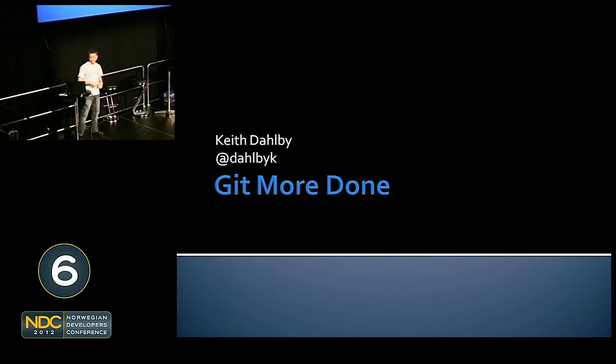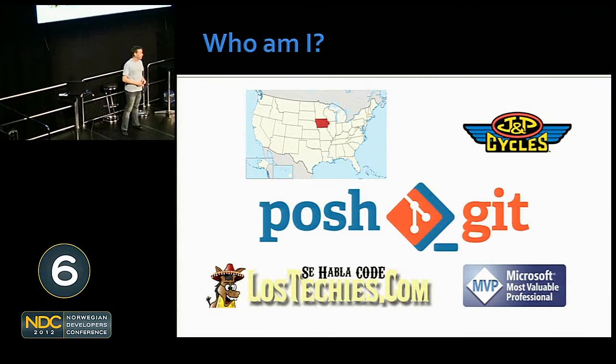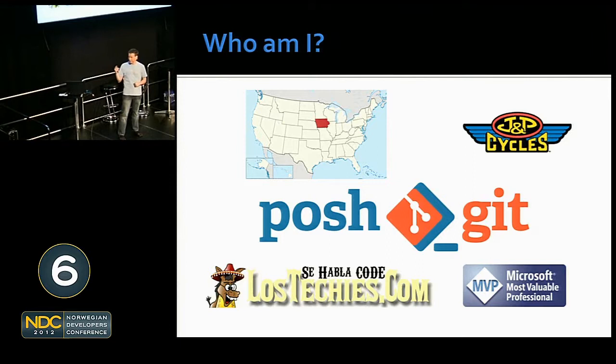Just a little bit about me. I'm from Iowa, which I was corrected — it's not the middle of nowhere because I don't consider the U.S. to be nowhere. It's just the middle of nowhere within the country. I work at J&P Cycles selling motorcycle parts, which is more interesting than it sounds. I work on an open source project called PoshGit. I blog with Los Techies. I'm a C Sharp MVP, which does not apply today at all.